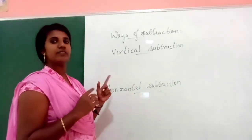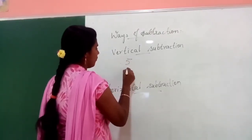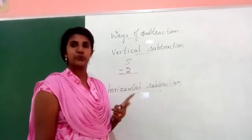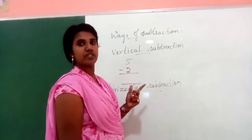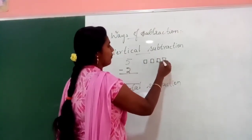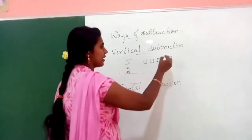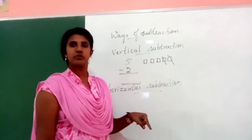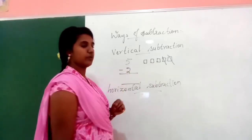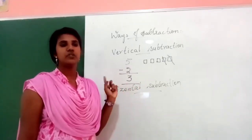I'll give a few examples for vertical subtraction. First: 5 minus 2. Here 5 is the starting number; we need to subtract 2. So we draw 5 small boxes and cross out 2 — minus means cross out. What is the remaining? 1, 2, 3. The answer is 3. So 5 minus 2 equals 3.